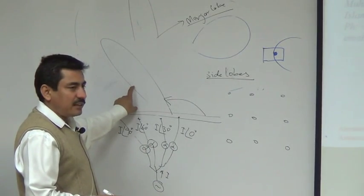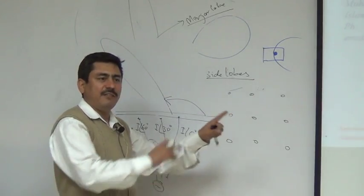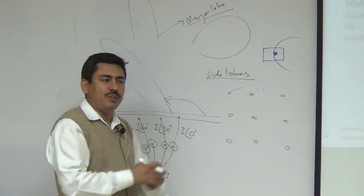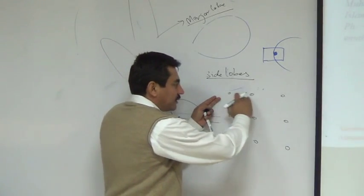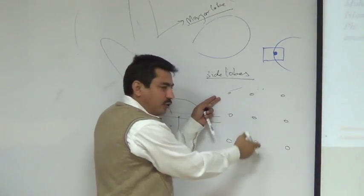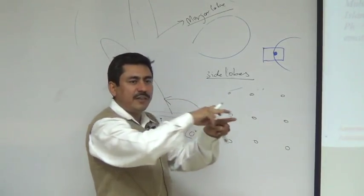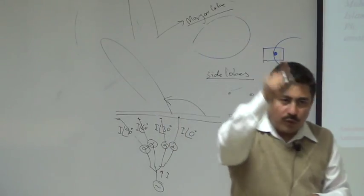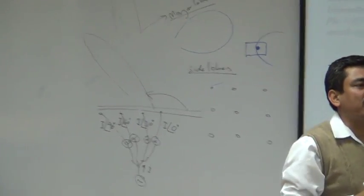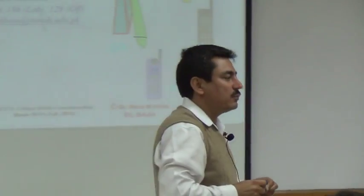Similarly, if within a plane we adjust the phase shifts in the same manner, we can control the beam not only in the azimuth direction but also in the vertical direction. So in both directions we can control the beam.